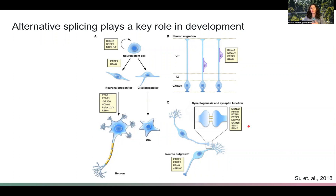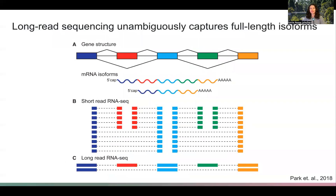When we want to study alternative splicing or alternative isoforms, it's ideal to use long-read RNA sequencing because short-read RNA sequencing cannot give us the full-length exon connectivity and 5' and 3' ends of transcripts, whereas long-read RNA sequencing can.